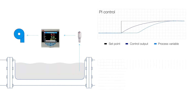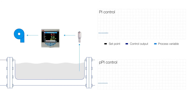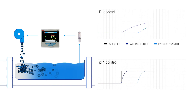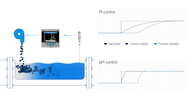ABB's ControlMaster series of controllers feature an easy-to-use dead time compensation function called predictive PI control, or PPI control. By predicting the pH value that will result from a change in additive dosing, PPI control can respond to process disturbances much faster than traditional control methods, without the fear of overdosing or instability.